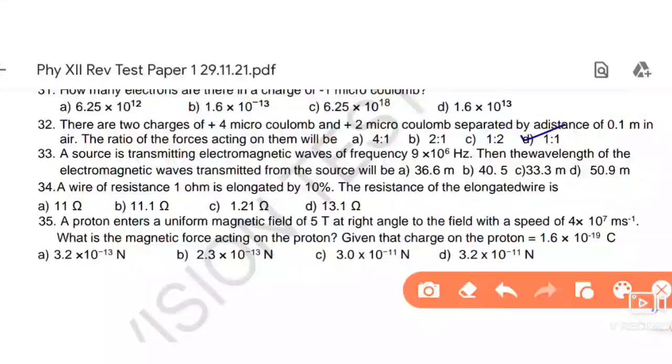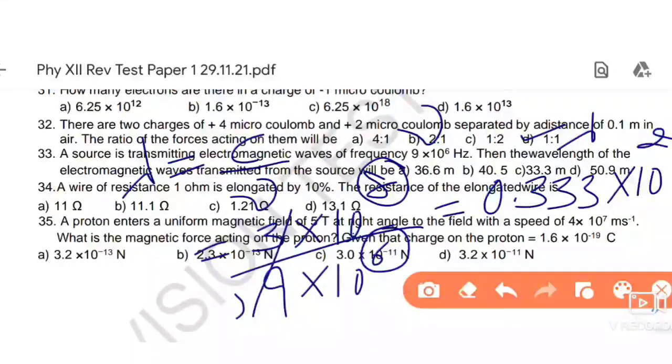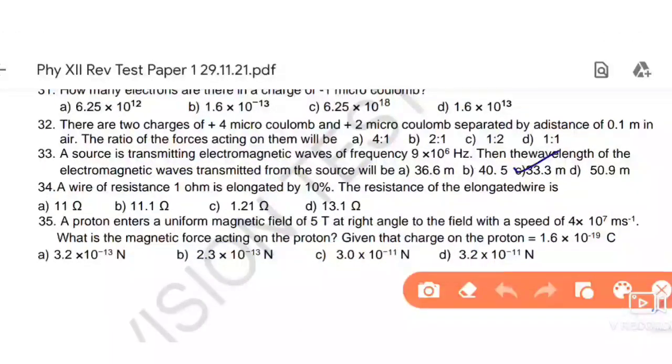Next, a source is transmitting electromagnetic waves of frequency. The wavelength of electromagnetic wave transmitted from source will be - lambda to find out. Lambda formula is c divided by nu. C value is 3 into 10 raise to power 8, nu value is 9 into 10 raise to power 6. After cutting, 1 over 3, solve to get 0.33 multiply 10 power 2. Answer is 33.3. C option is the right answer.